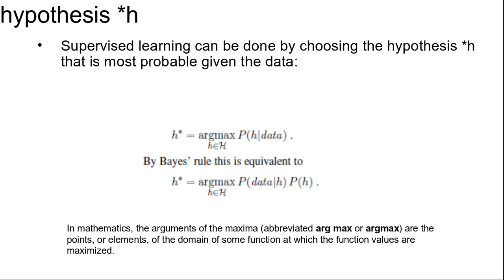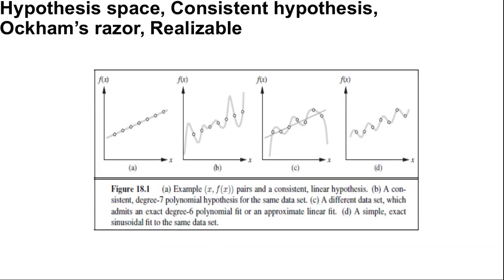We can say that the prior probability P(h) is high for a degree 1 or 2 polynomial, lower for a degree 7 polynomial, and especially low for a degree 7 polynomial with large spikes as you can see in figure b. We allow unusual-looking functions when the data say we really need them, but we discourage them by giving them a low prior probability.